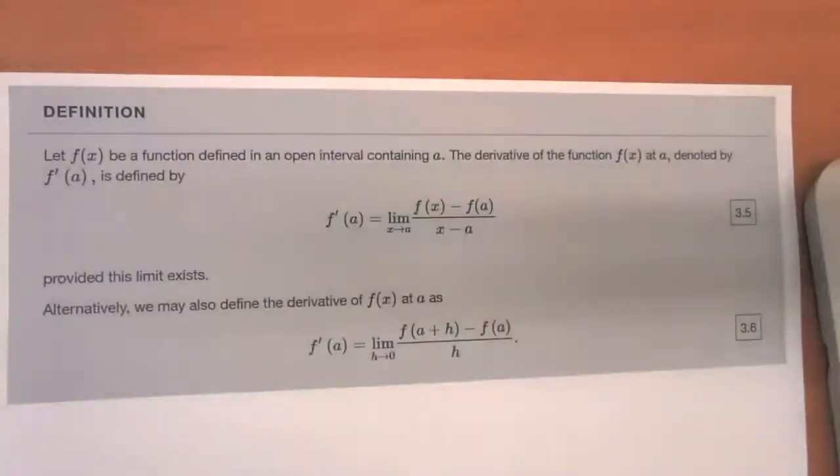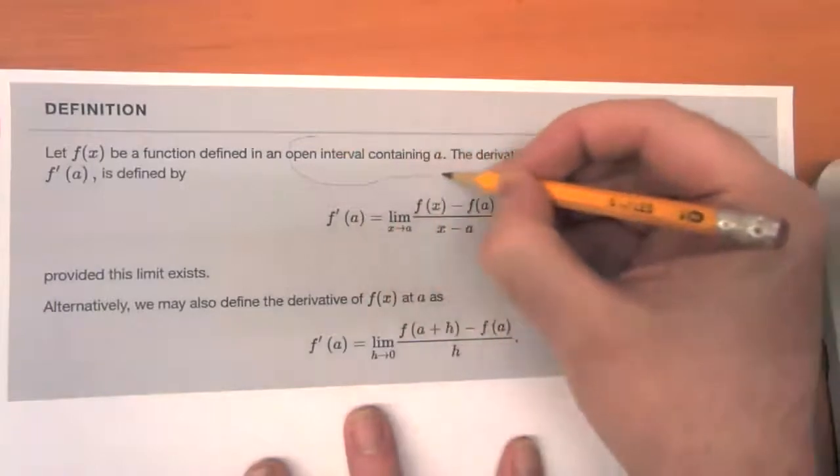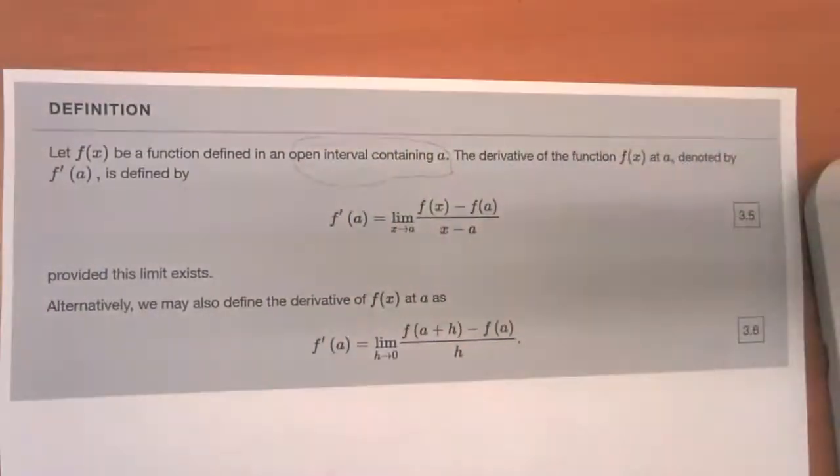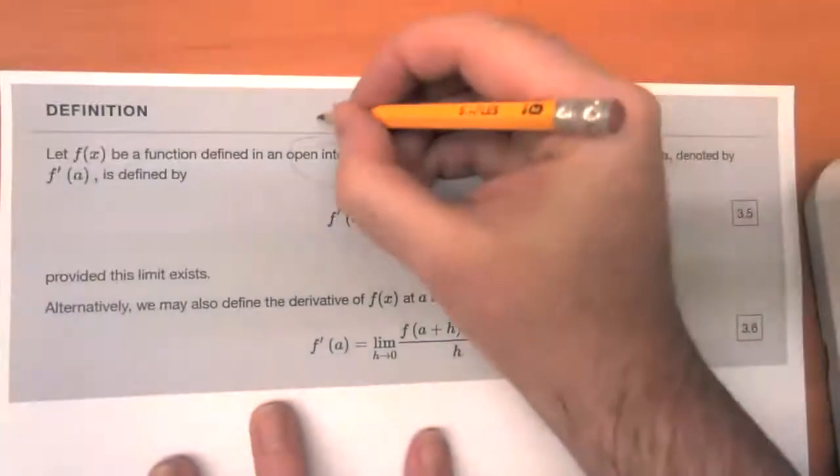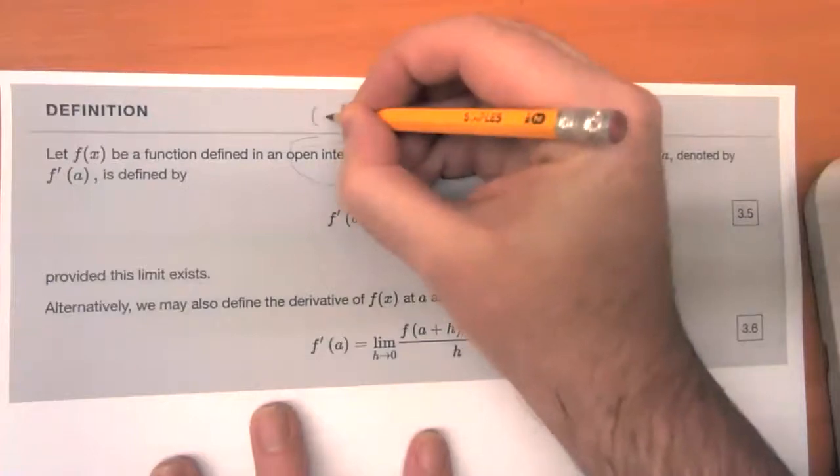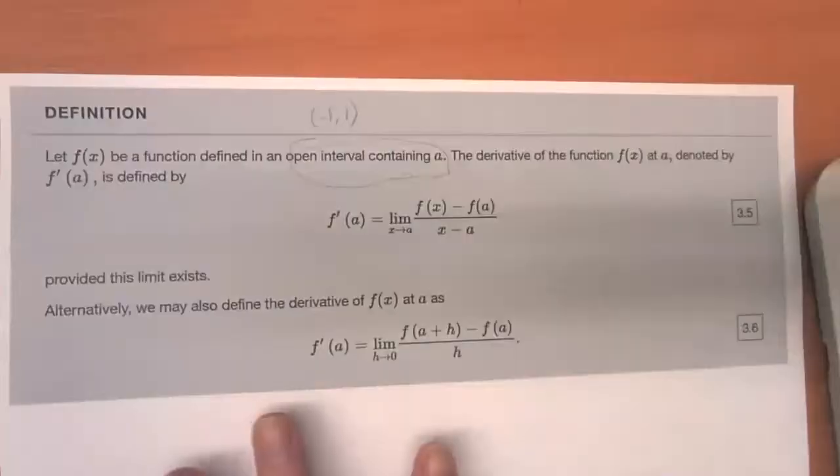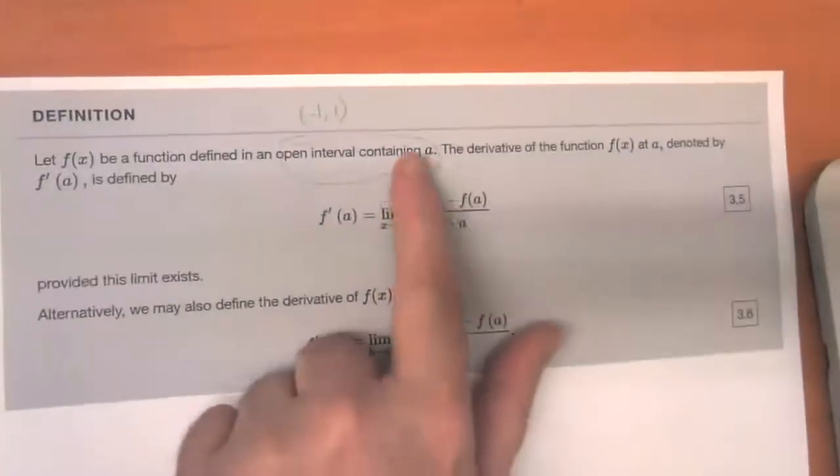Here's the textbook definition. It says, let F of X be a function defined in an open interval containing A. So open interval just means what you're used to. You know, so like negative one comma one is an open interval because you've got parentheses on both sides and it contains A.